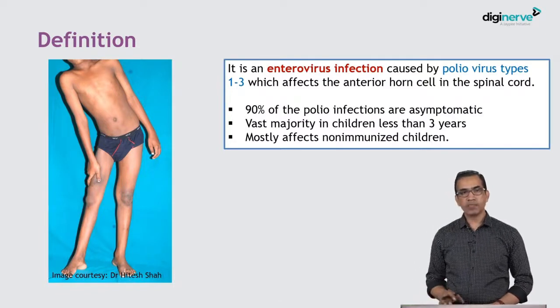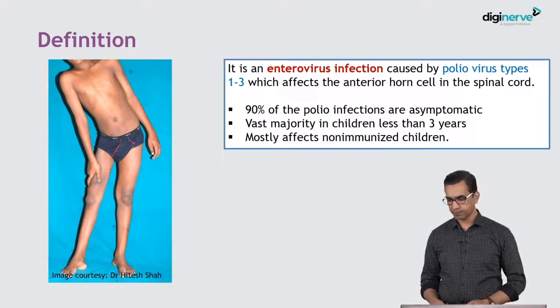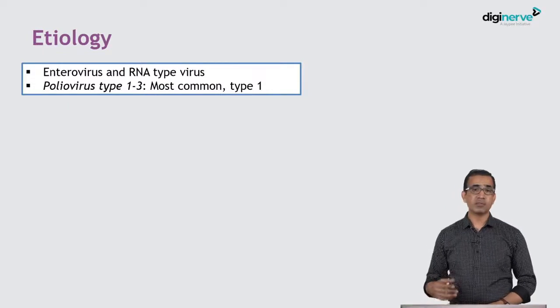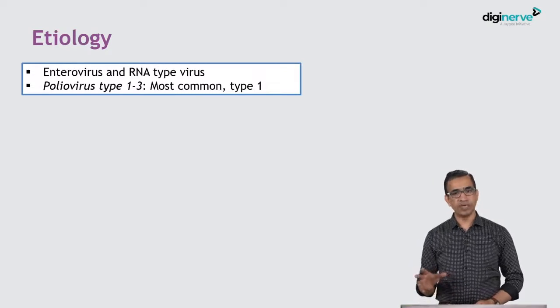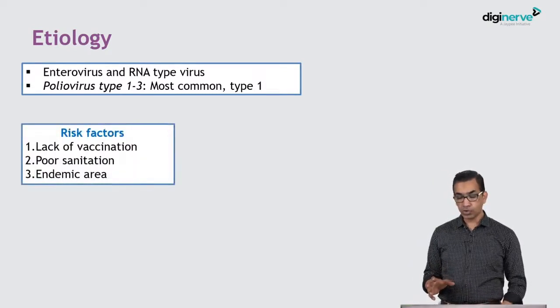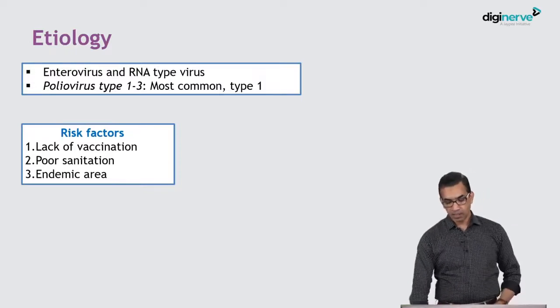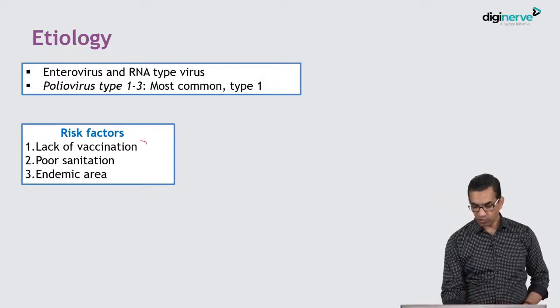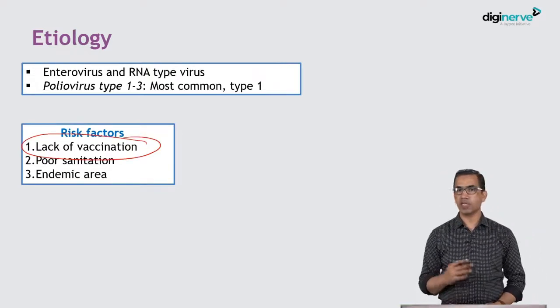90% of poliovirus infections are asymptomatic. A vast majority of affected children are less than 3 years old, and it mostly affects kids who are non-immunized. It is an enterovirus RNA type of virus, and the most common type which affects humans is type 1. The most important risk factor is the lack of vaccination, so we should not let our guards down. Kids must be continuously vaccinated, because viruses, once they are in nature, usually do not go anywhere — they are just waiting for the first opportunity to strike hard.